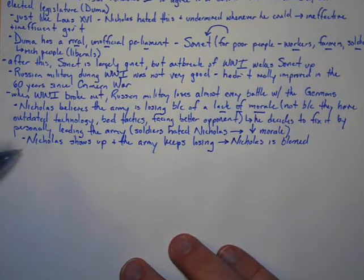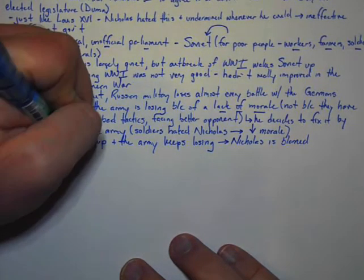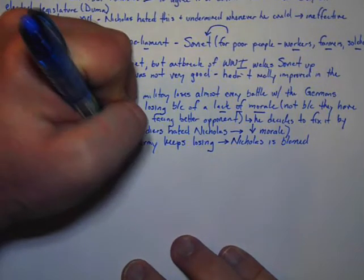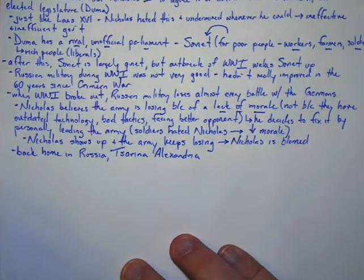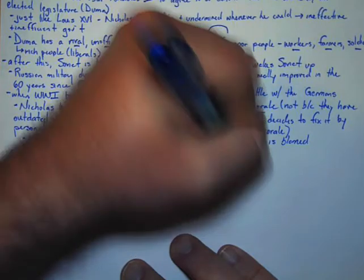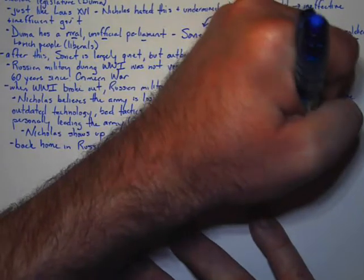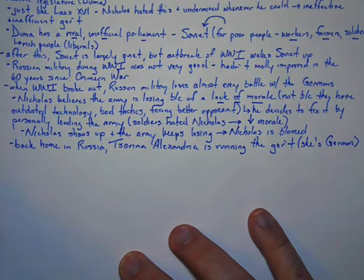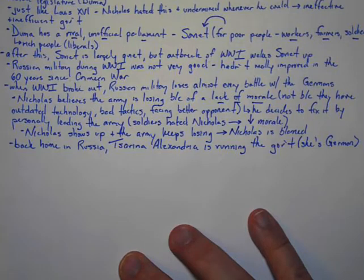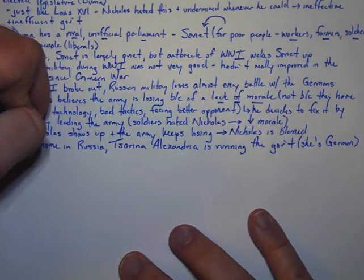Now the army's losses are now Nicholas's losses. While this is going on, back home in Russia, the Tsar's wife, the Tsarina Alexandria, is running the government. She's competent at it. The only problem is she's German. Much like how Louis XVI's wife was Austrian, and the Austrians were France's biggest enemy, right now, the person running the Russian government is German, and the people think she's a spy or a traitor.